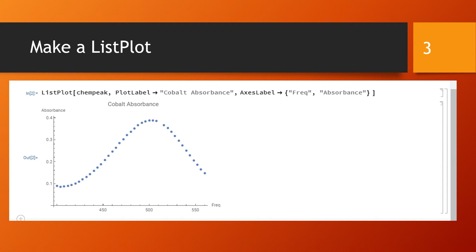Next we make a list plot of the data named ChemPeak and we give it a plot label of cobalt absorbance, and we give it axis labels that's an x-y pair: the x is frequency and the y is absorbance.